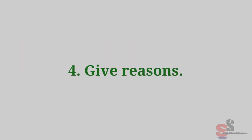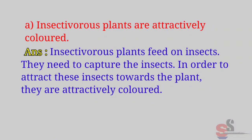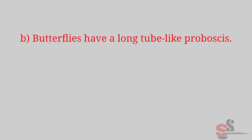Question 4: Give reasons. A. Insectivorous plants are attractively colored. Answer: Insectivorous plants feed on insects. They need to capture the insects. In order to attract these insects towards the plant, they are attractively colored.